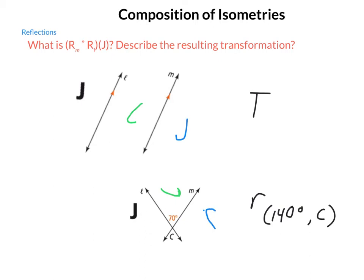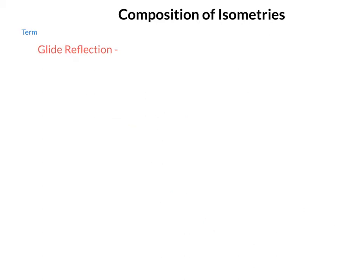So as far as these isometries are concerned, we can create translation as a series of reflections. We can create rotation as a series of reflections. Well, the only other one that we have is reflection itself, and a reflection is always going to be itself. So what else can we do with compositions of isometries? There is one other type that does come up on occasion, and that is called a glide reflection.